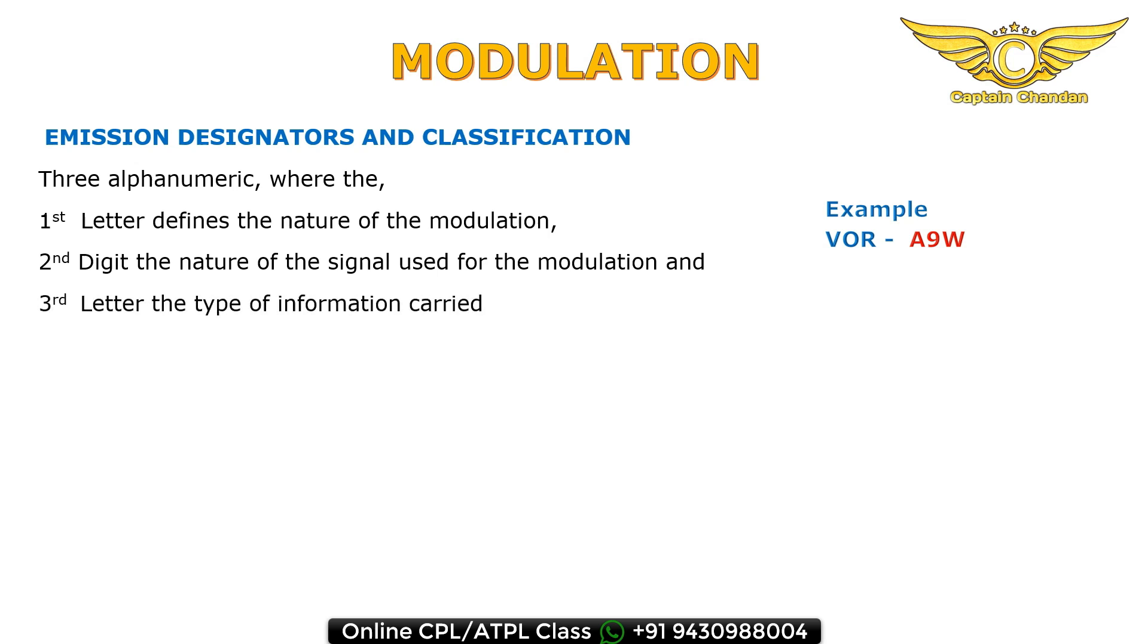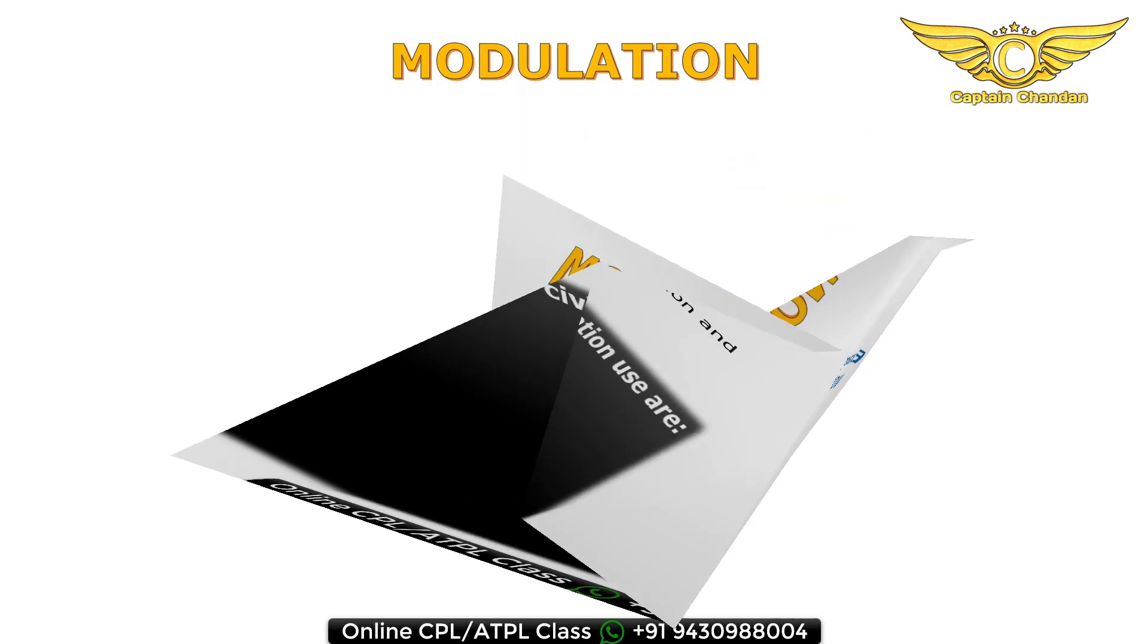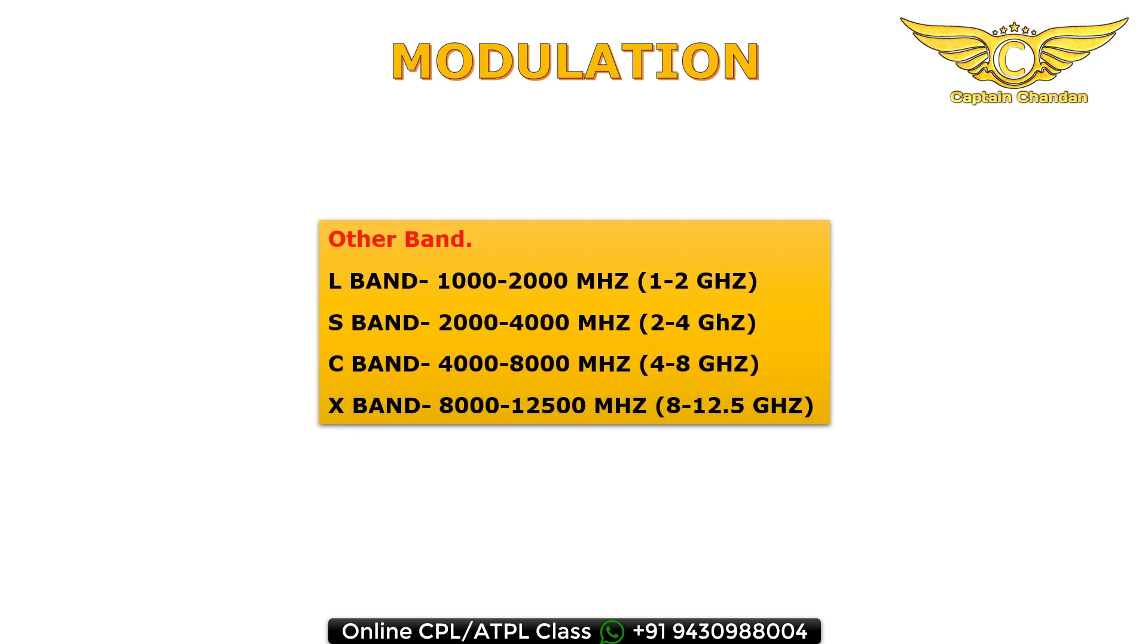Other bands which are used in radar and other systems. Remember for examination purpose: L band 1 to 2 gigahertz, S band 2 to 4 gigahertz, C band 4 to 8 gigahertz, X band 8 to 12.5 gigahertz. This is important.